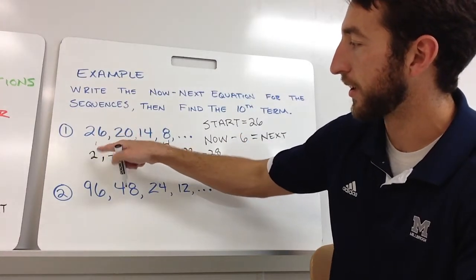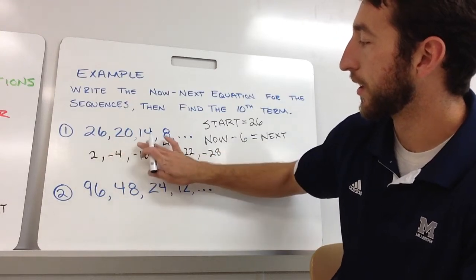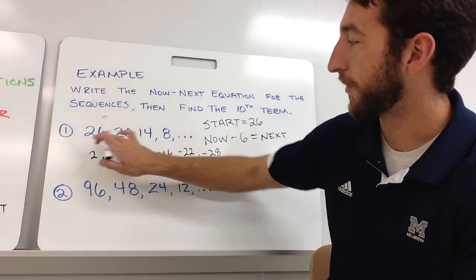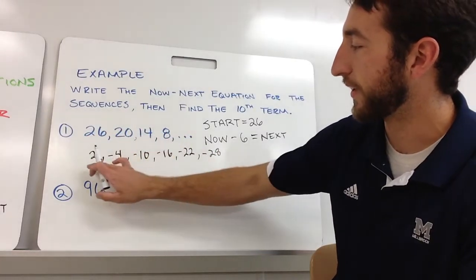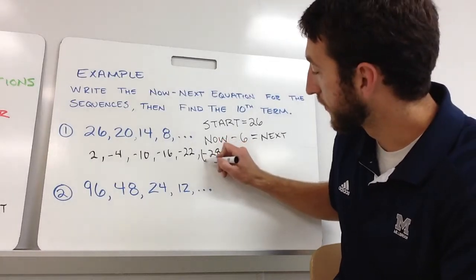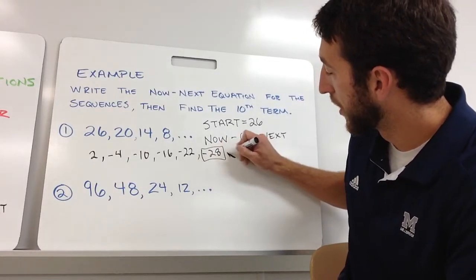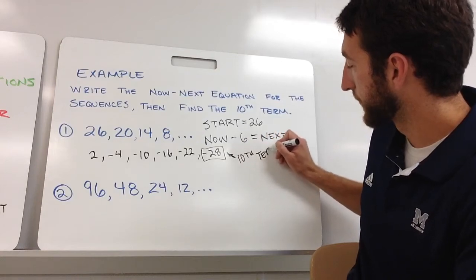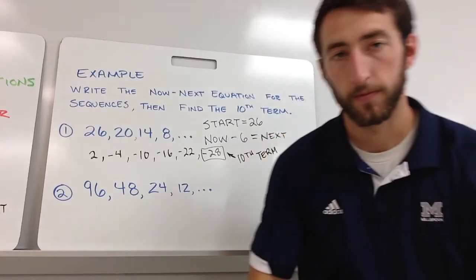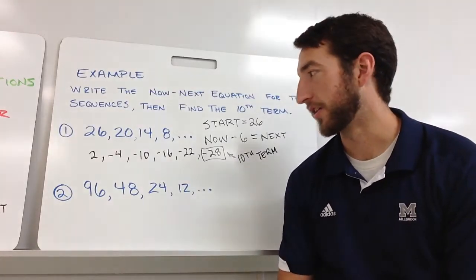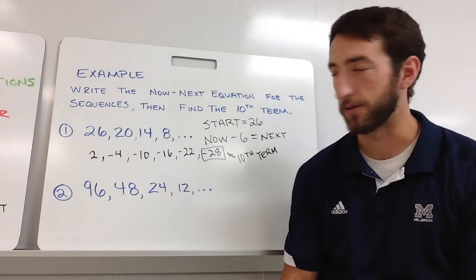Let's make this a little bit clearer. I got first, second, third, fourth, fifth, sixth, seventh, eighth, ninth, tenth. That would be my tenth term. So that takes a little bit more and takes a little bit longer to do that one.